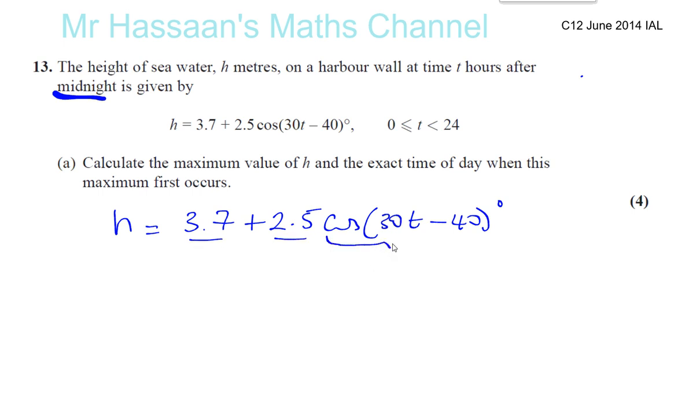Cosine of 30t minus 40 varies. Now the highest value of the cosine of any angle can be 1. And you know the cosine curve. If you draw it between 0 and 360, it looks like this and it repeats that same pattern all the way. So it never goes above 1, never goes below minus 1. So the maximum value of this.